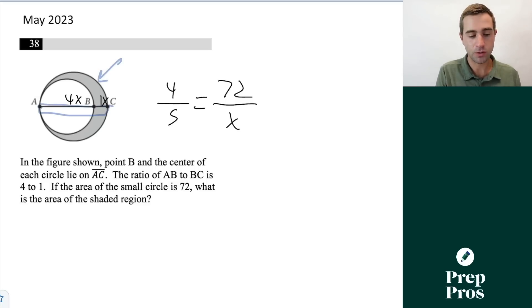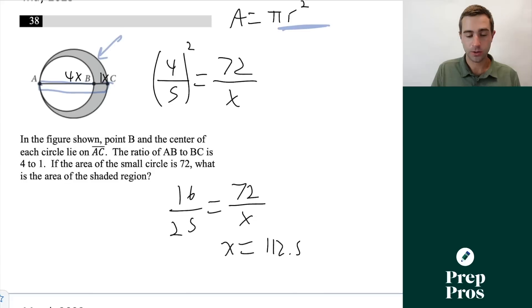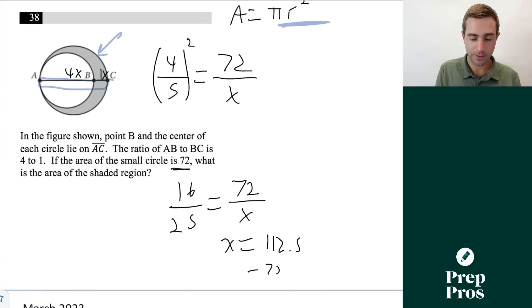The mistake a lot of students make is they simply do 4 is to 5 as 72 is to x. But since this ratio is representative of the radiuses ratio or the diameters ratio, we have to understand that the area of a circle is πr². So we're going to have to square this scale factor, because the ratio is not really going to be the same for the area as it is for the radius or the diameters. It's going to be that ratio squared because we're doing πr². So the ratio is really going to be 16/25 = 72/x. From here, we can simply cross multiply and we can solve through for x. So we would do our 72 × 25, and then we would divide it by 16. That would give us that x = 112.5. That's going to give us the area of the bigger circle. So then all we have to do is subtract away the 72. And that will give us our correct answer here of 40.5.